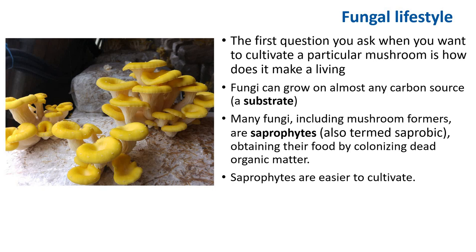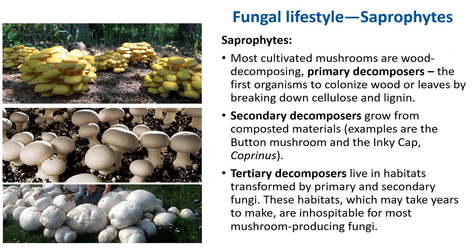The first question to ask when you want to cultivate a particular mushroom is: how does it make a living? As a group, fungi can grow on almost any carbon source or substrate. Many fungi, including mushroom formers, are saprophytes, obtaining their food by colonizing dead organic matter — usually plant material. These are the ones we will cultivate. Most cultivated mushrooms are wood-decomposing, called primary decomposers — the first organisms to colonize wood or leaves by breaking down cellulose and lignin. For example, oyster mushroom and shiitake are primary decomposers.